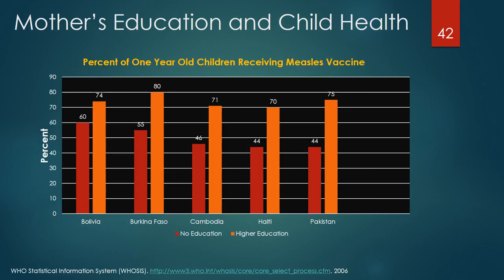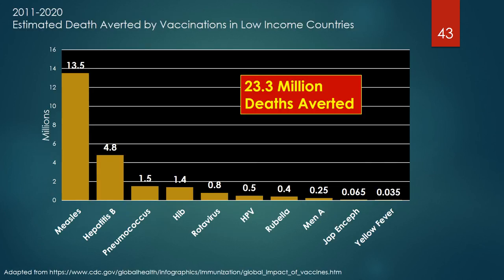Returning to the discussion of mother's education and child health, a slide from World Health Organization data from 2006 for Bolivia, Burkina Faso, Cambodia, Haiti, and Pakistan clearly shows the association of a mother's educational level and the measles immunization status of their children. Women with no education had measles immunization rates ranging from 13 to 31 percentage points less than women who were educated. From 2011 to 2020, 23.3 million deaths were averted worldwide by immunizations.